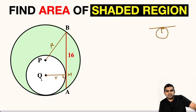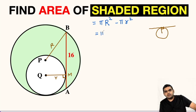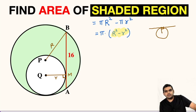After assuming the radius of the bigger circle as capital R and the radius of the smaller circle as small r, the area of the shaded region can be written as π times capital R squared minus π times small r squared. We can take π common, so this will be π times (R² − r²). If we are able to find the value of R² − r², we can easily compute the area.